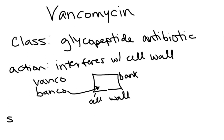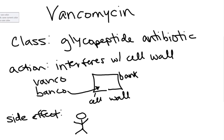One side effect commonly asked about on exams is Red Man Syndrome. The way I remember it: here's a person who's had vancomycin — think 'V' for vanco. There's a V shape here, and with Red Man Syndrome, people get an itchy red rash on their head, neck, and torso — everywhere above the V.